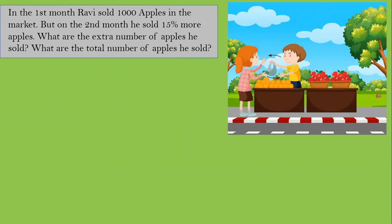Now we see a boy selling oranges and apples — you can tell me your favorite fruit in the comments. This boy is Ravi. In the first month, Ravi sold 1000 apples in the market. In the second month, he sold 15 percent more apples than the first month.